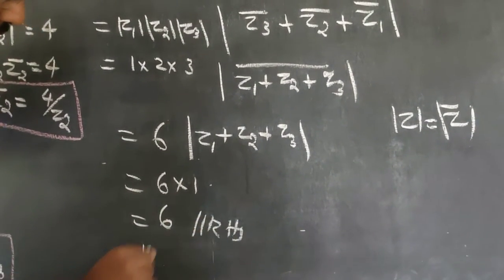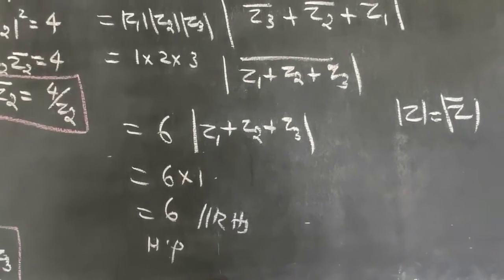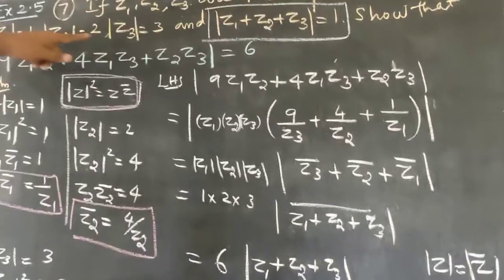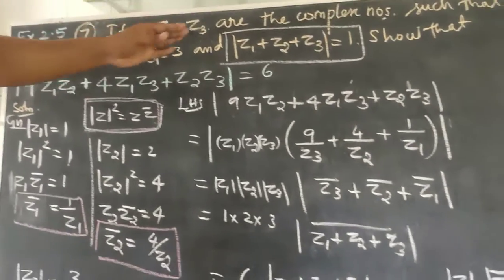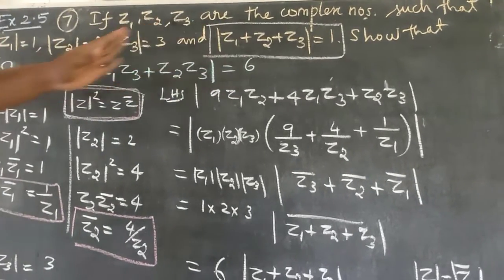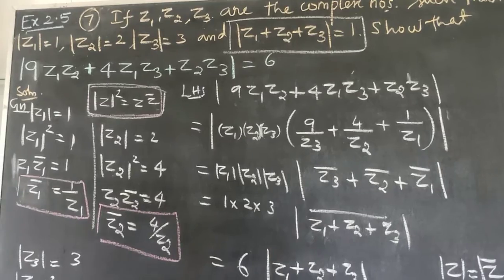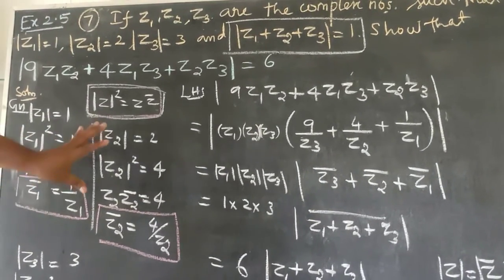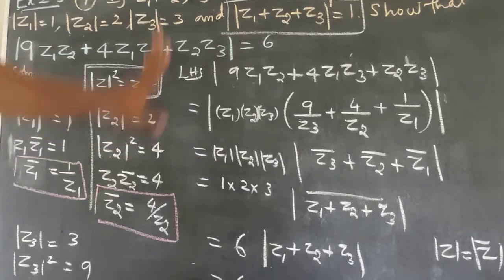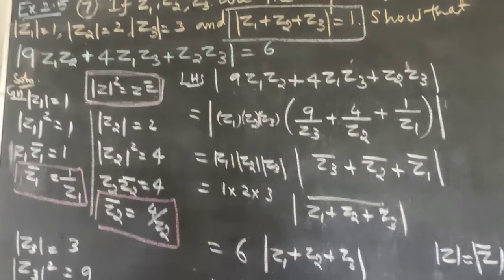This is the right hand side, hence proved. The answer equals 6. So students, you understand the question — using modulus of Z1 plus Z2 plus Z3 equals 1, the answer comes out to 6. Thank you students.